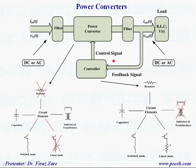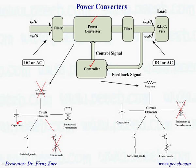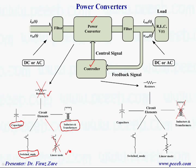Looking at the block diagram, the power electronic system consists of a power converter, which actually processes the power, and this converter is controlled by a controller. The circuit elements within the power converter consist of capacitors, magnetic elements like inductors or transformers, and transistors operating in switch mode. Basically, we don't have lossy components like resistors or linear mode transistors.